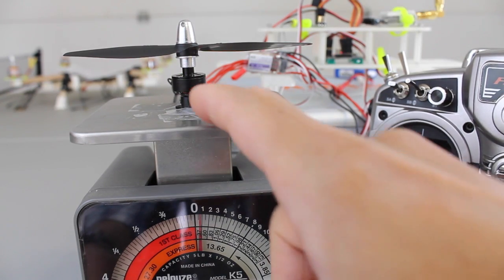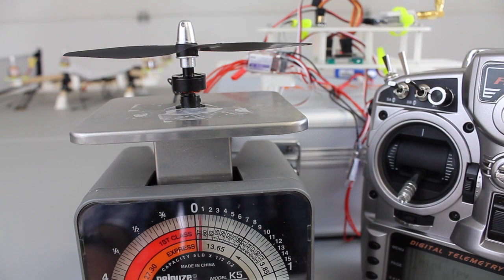Okay now we have the iPower 2200 kV motor. It supports both the 2S and the 3S battery. We'll start with the 2S.